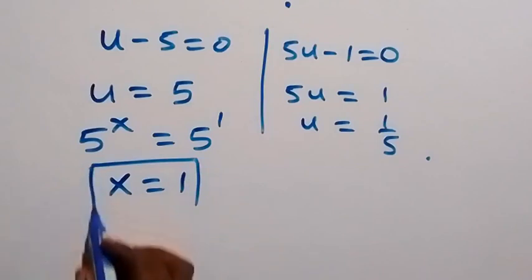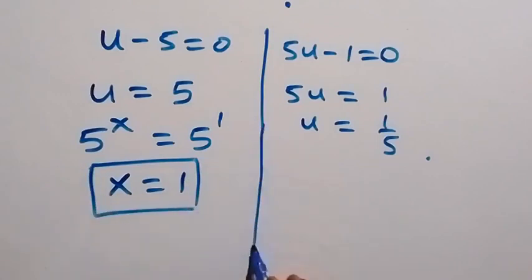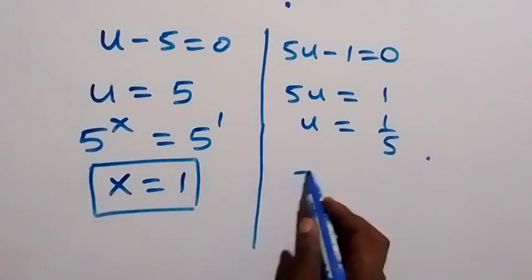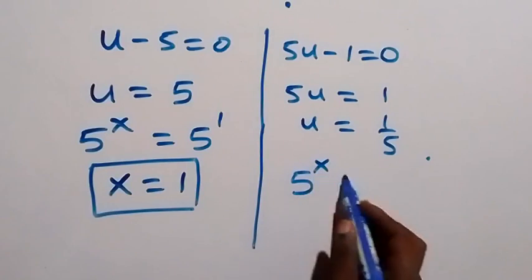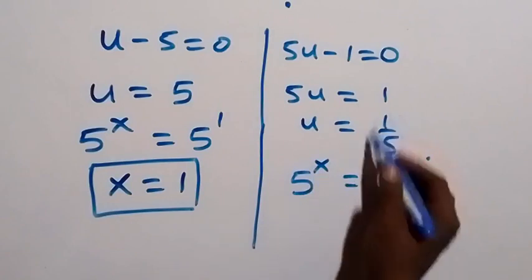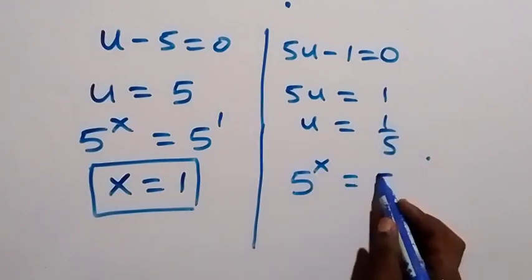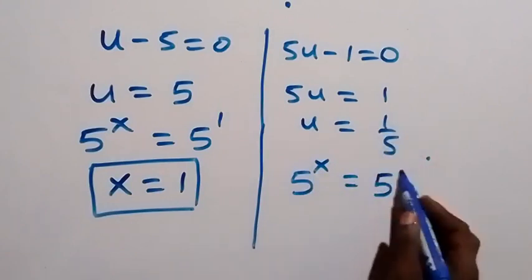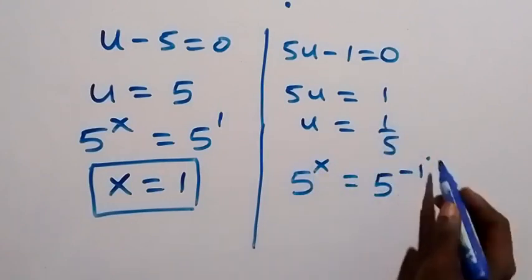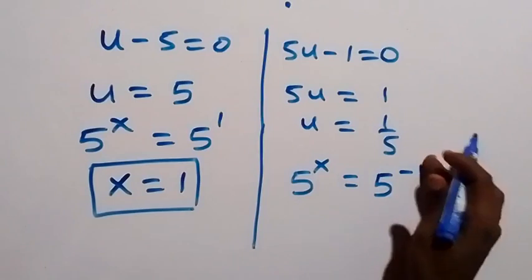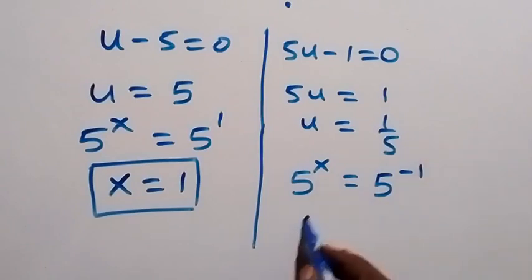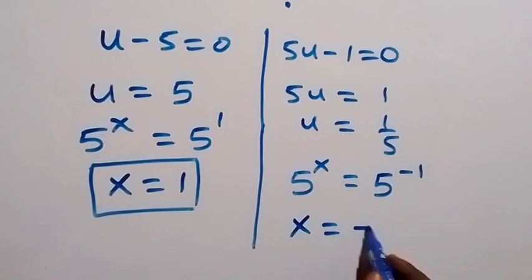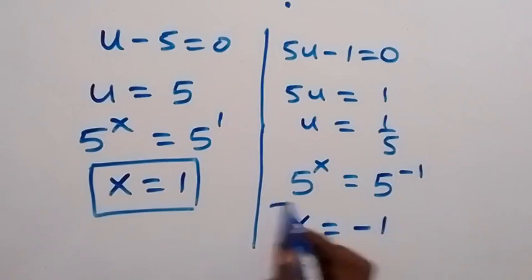Also, on this side, 5 raised to the power x, which is u, equals 1 over 5. Now, 1 over 5 can be written as 5 raised to the power minus 1. Then, since the bases are equal, x here will be equals to minus 1.